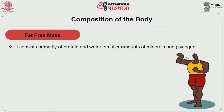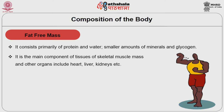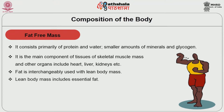Fat Free Mass consists primarily of protein and water, with smaller amounts of minerals and glycogen. Fat Free Mass is the main component of tissues of skeletal muscle mass and other organs including heart, liver, kidneys etc. Fat Free Mass is interchangeably used with lean body mass; however, lean body mass includes essential fat. An individual with 20% body fat will have 80% fat-free mass.